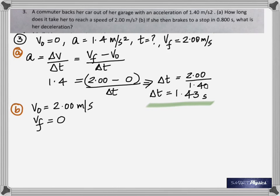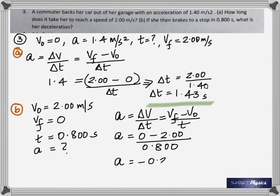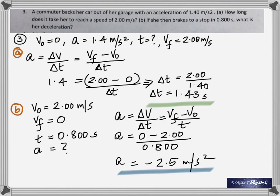In part b, if she then brakes to a stop in 0.8 seconds, what is her deceleration? Initial velocity is 2 m/s, final velocity is 0, time is 0.8 seconds. Use the same formula — plug those numbers in and you get negative 2.5 m/s². The negative shows it's a deceleration. Her deceleration is positive 2.5 m/s² — the acceleration is negative but the deceleration is positive.